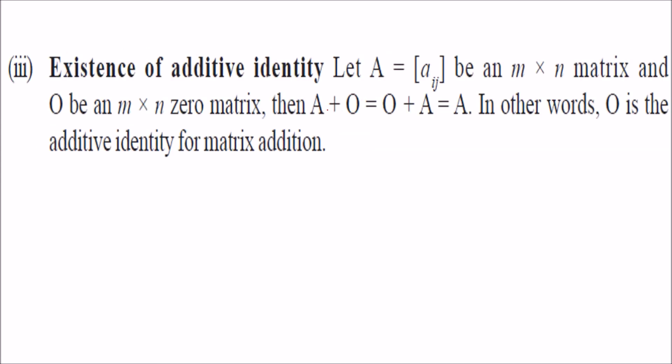Existence of an additive identity: additive identity means if you have a matrix A which is m×n and you have a zero matrix, that is all elements are zero. So if you add A with zero or zero with A...